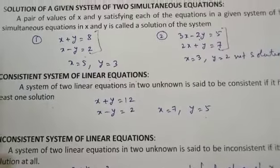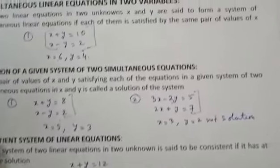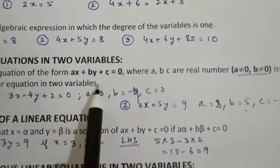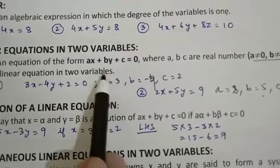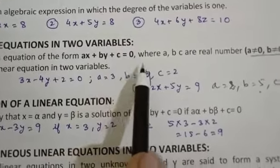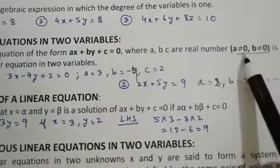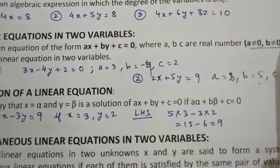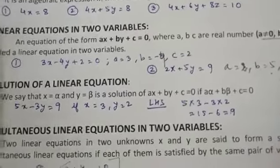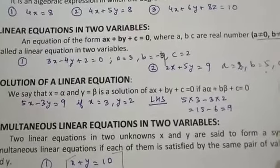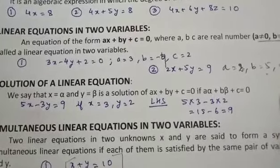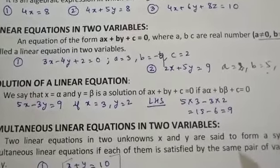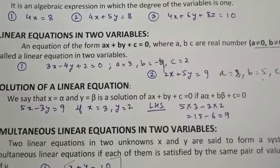So if you look at the topic here, in linear equations in two variables the most important is the format ax plus by plus c equal to 0, where a should not be equal to 0 and b should not be equal to 0. In the next class I will be taking up some more topics related to linear equations in two variables. Thank you for today.